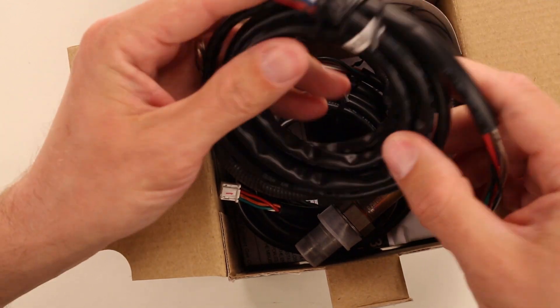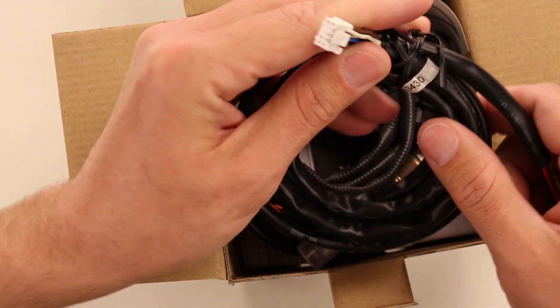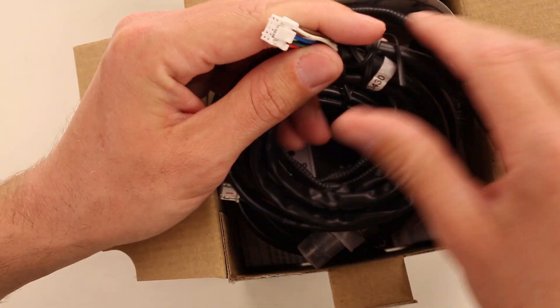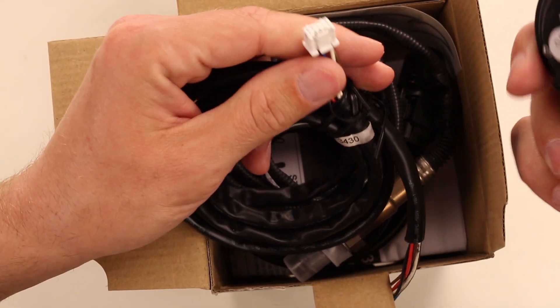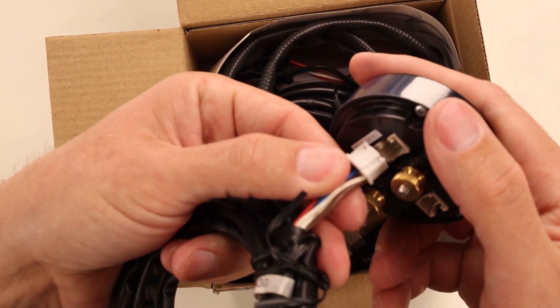Inside the kit, you're going to find two wiring harnesses. One that connects to the vehicle and powers the gauge. Plugs in here on the back side.